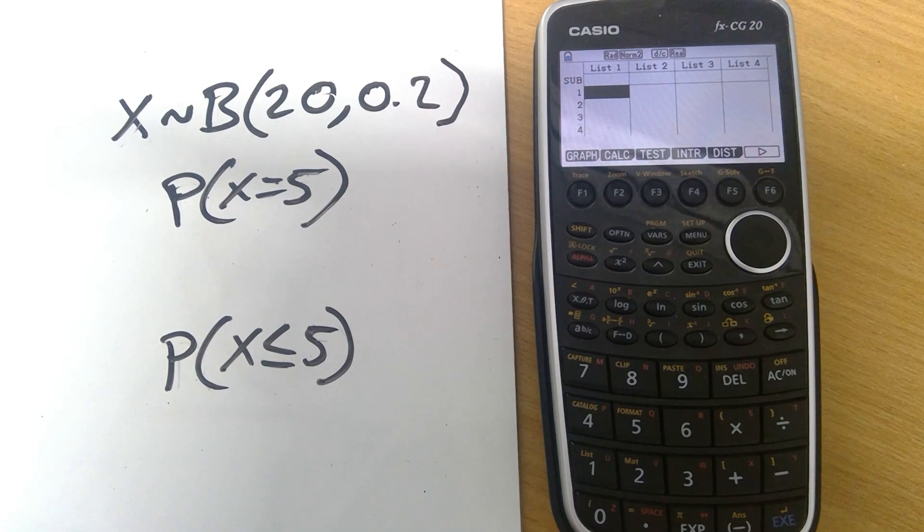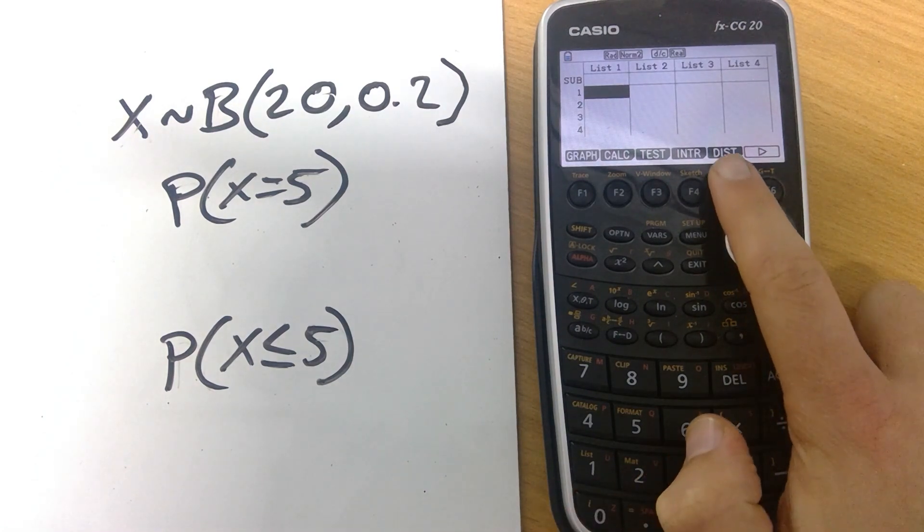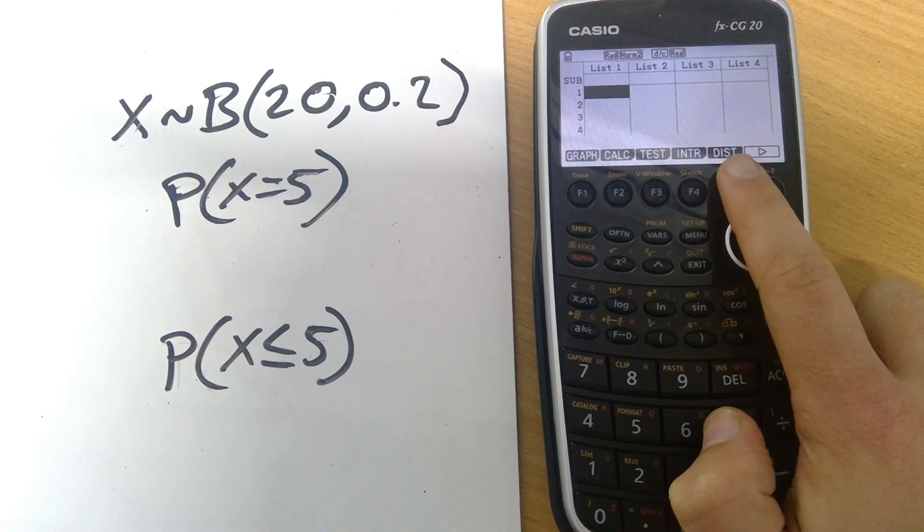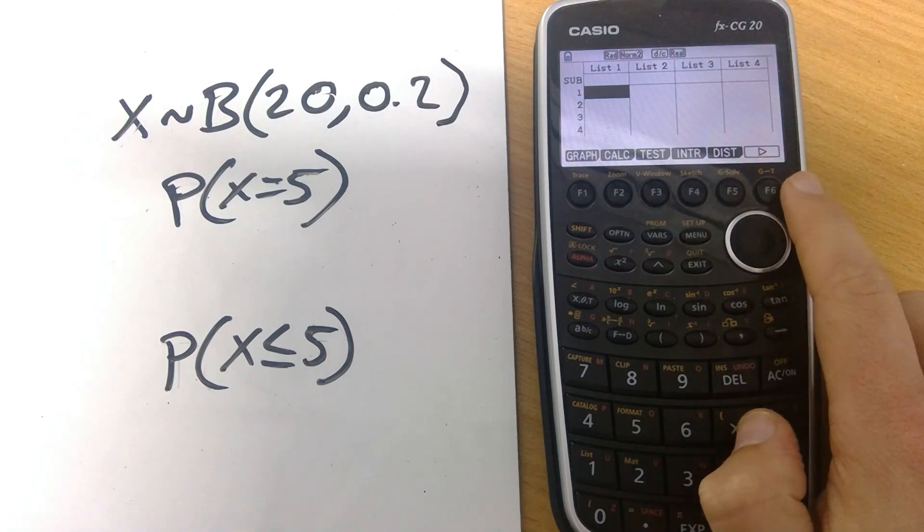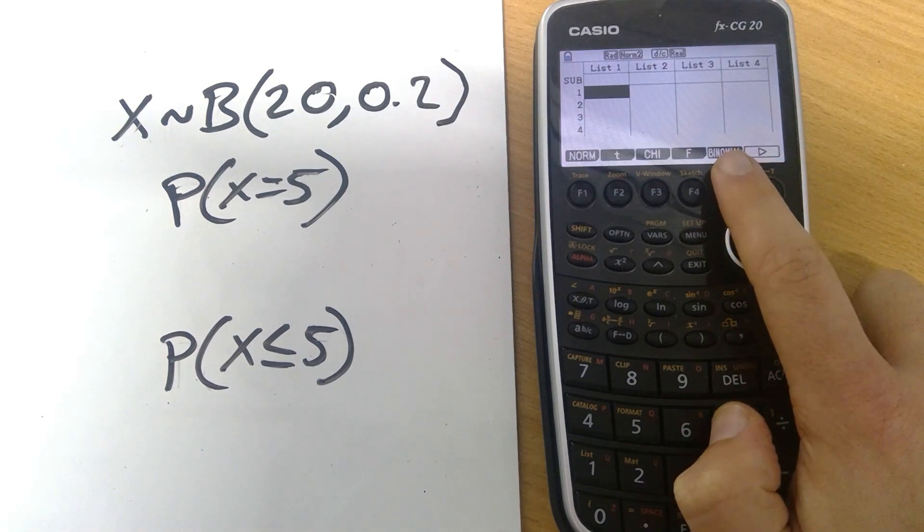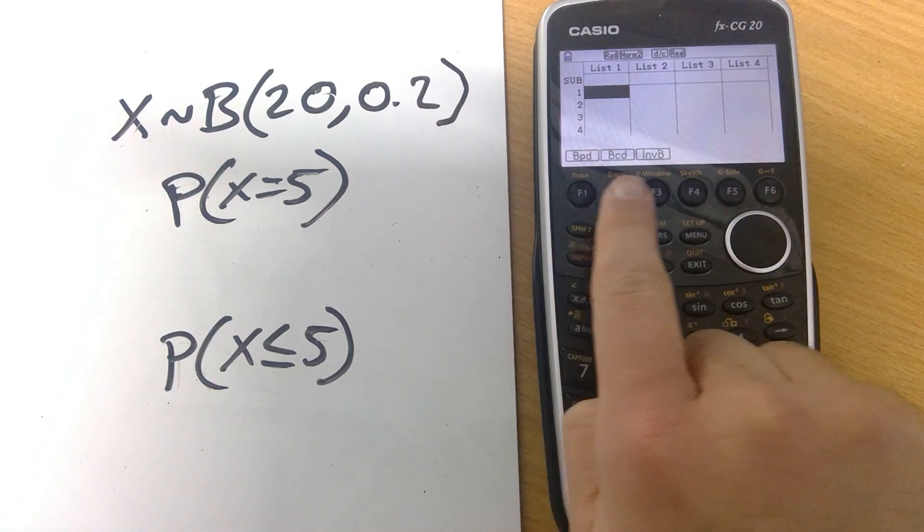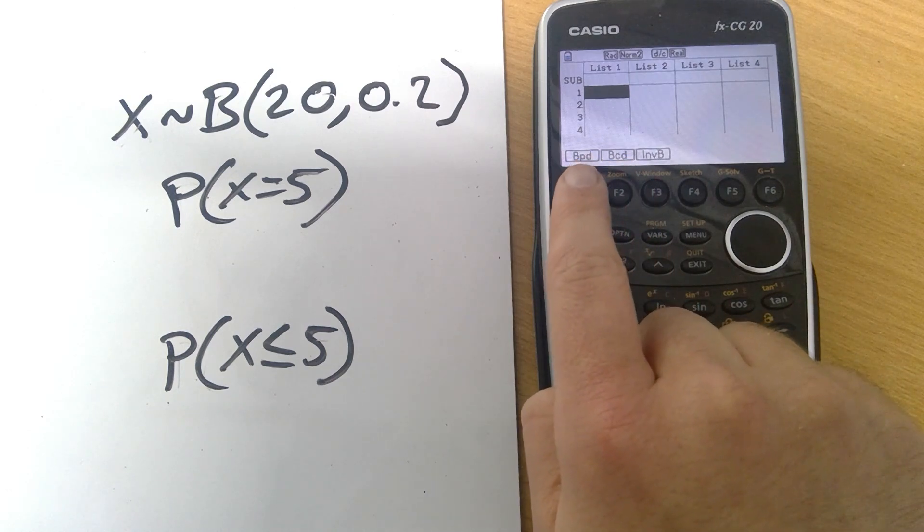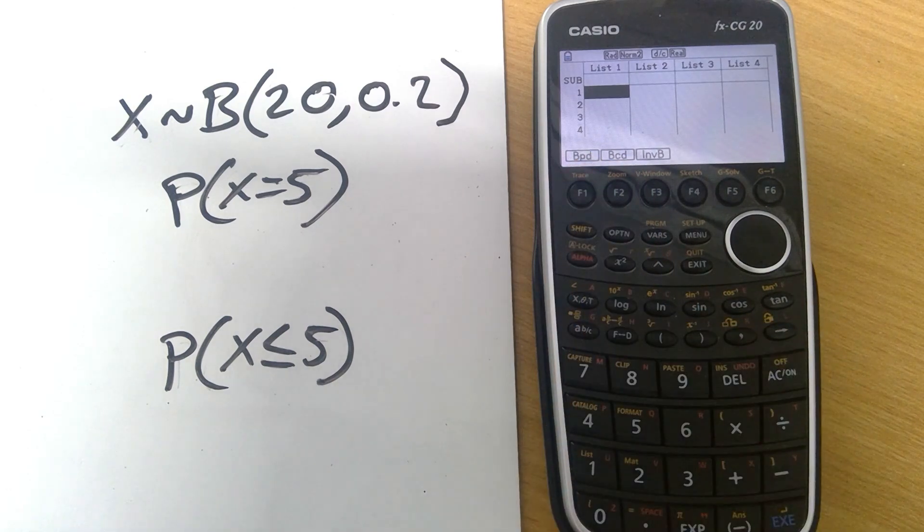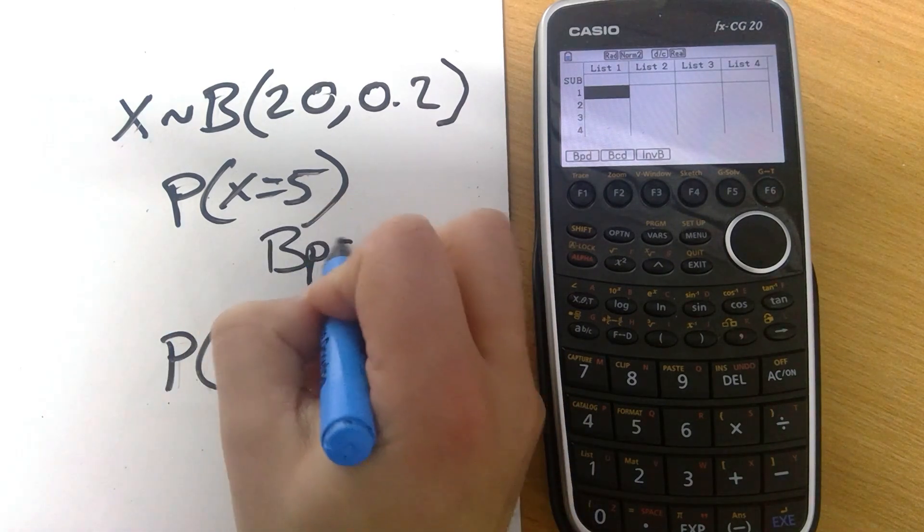We'll deal with the first case where we're looking for a specific value first of all. We need to tell the calculator which distribution we're in so press the button under distribution F5. It might be that you've got different stuff up on your screen in which case pressing F6 is going to cycle through the different menus. Press F5 and then we want binomial. Now we get three different options and the two we're going to look at today are BPD and BCD. First of all we're going to look at BPD, the binomial probability distribution.